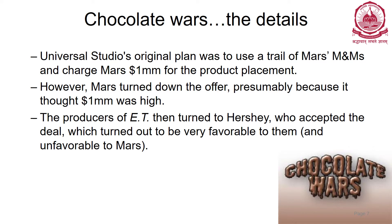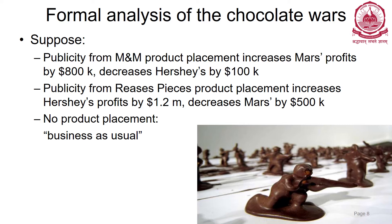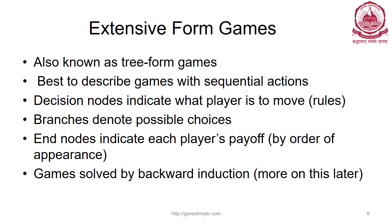Let's formally analyze this problem with numbers. Suppose publicity from M&M product placement increases Mars' profit by 800K and decreases Hershey's by 100K. Publicity from Reese's Pieces product placement increases Hershey's profit by 1.2 million and decreases Mars' by 500K — because the increase in Hershey essentially comes from customers switching away from Mars. If neither did product placement, it is business as usual. This game involves sequential activity: the producers went to Mars first, followed by Hershey.